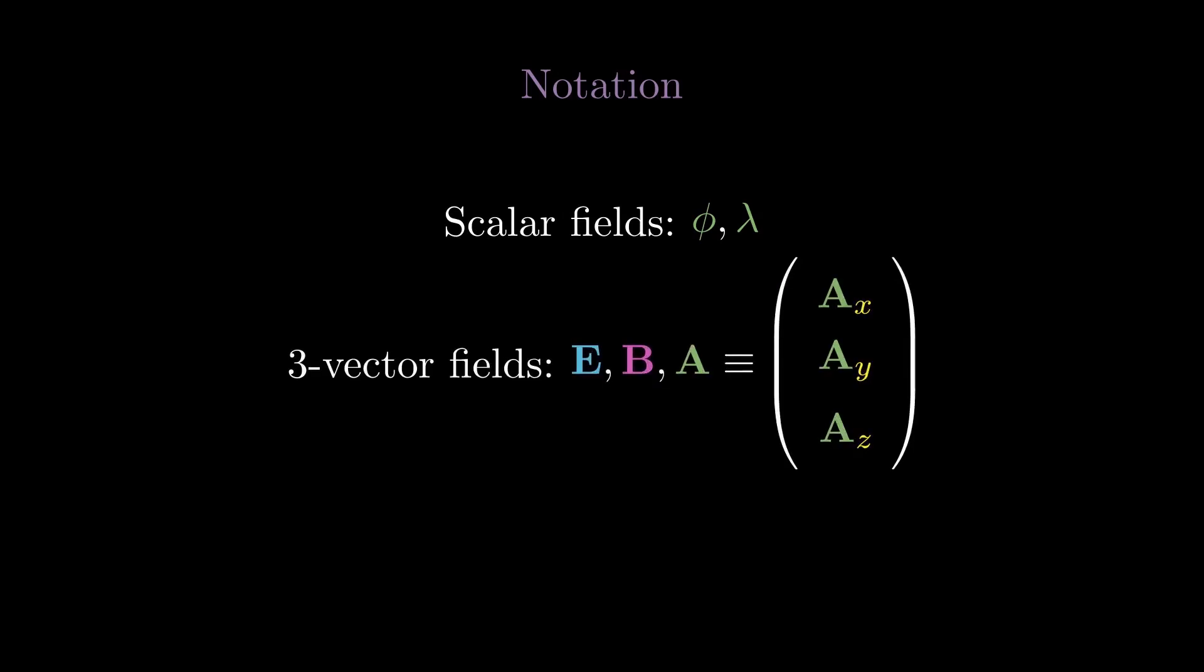First, some clarification on notation. I will be using lowercase phi and lambda to denote scalar fields, functions that offer just one number for each input of space and time. I'll be using bold capital letters to denote 3D vector or 3-vector fields, which give 3 numbers for each point in spacetime, corresponding to their x, y, and z components.